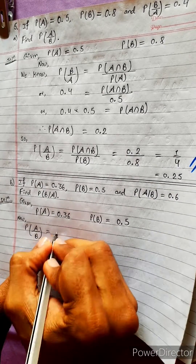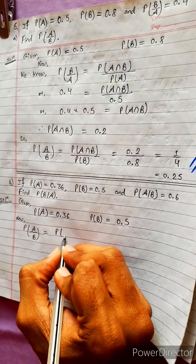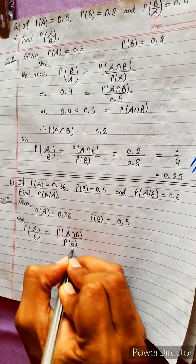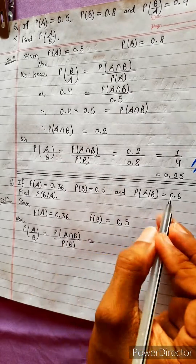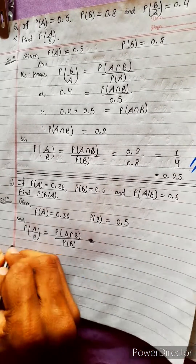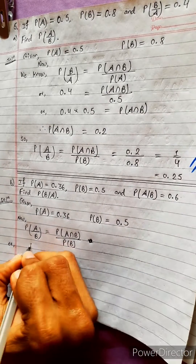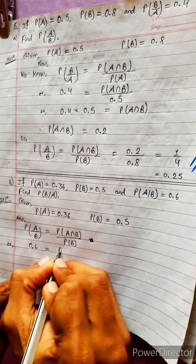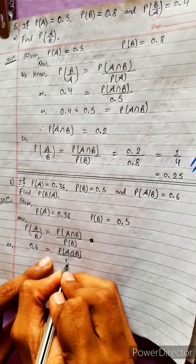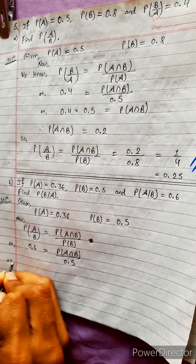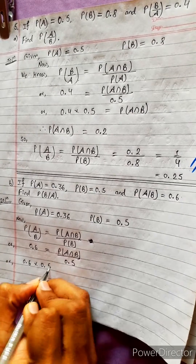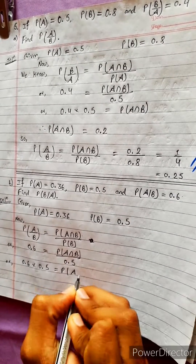Now we know the formula. According to the formula, P(A|B) equals P(A intersection B) divided by P(B). So 0.6 equals P(A intersection B) divided by P(B), which is 0.5. Therefore, 0.6 multiplied by 0.5 equals P(A intersection B).